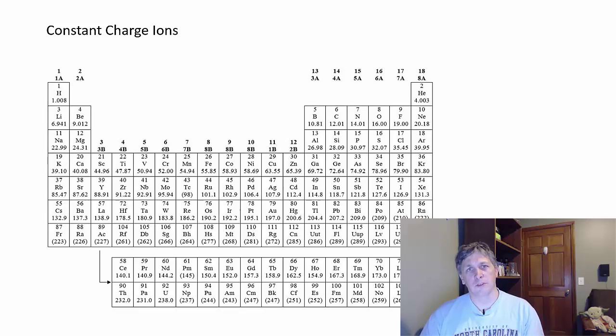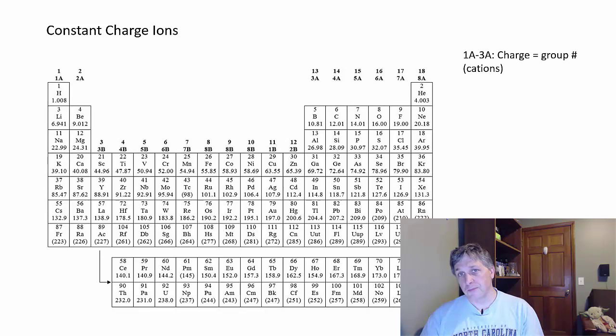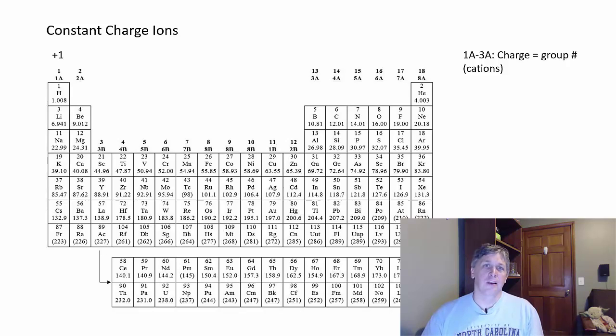The reason we use this grouping system — where main group elements are A's and transition elements are B's — is that you get a clear trend. For groups 1A, 2A, and 3A, the charge equals the group number, and these elements tend to form cations. So group one alkali metals form plus one, group two alkaline earth metals form plus two, and group 3A forms plus three — with the exception of boron, since it's technically a metalloid.